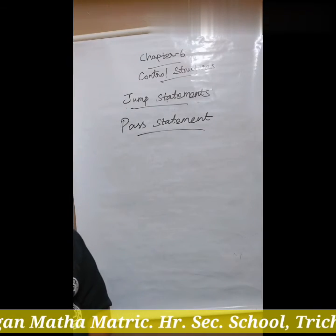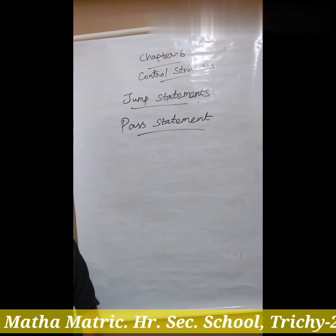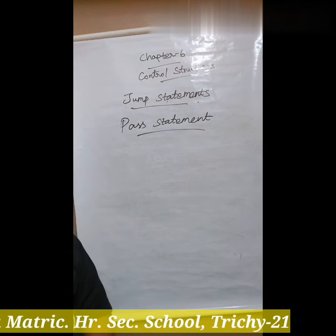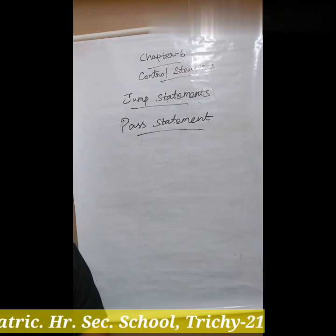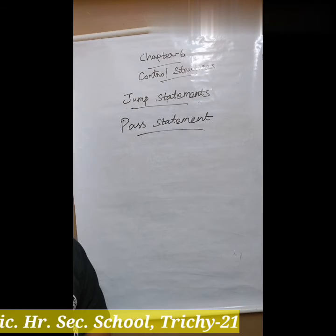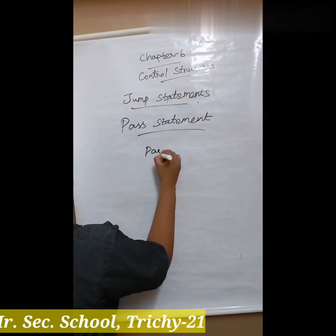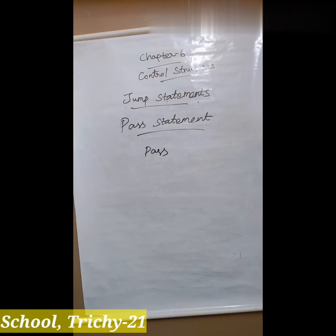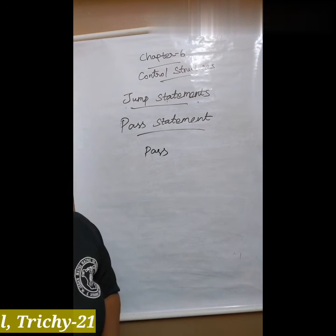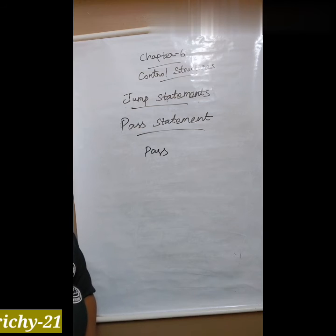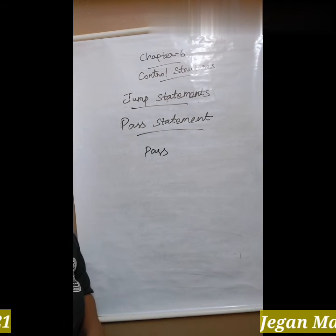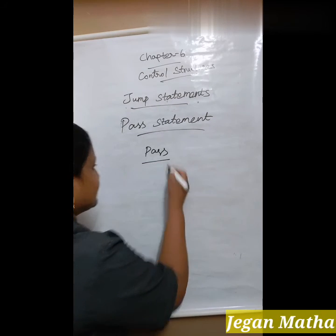The next one is pass statement. In Python, pass is a null statement — it is executed by the interpreter but completely ignored. That means nothing happens when the pass statement is executed; the result is no operation. The syntax is simply: pass. Pass statement is generally used as a placeholder — when we have a loop or function to be implemented in future and not now. We cannot have an empty body because the interpreter would raise an error.